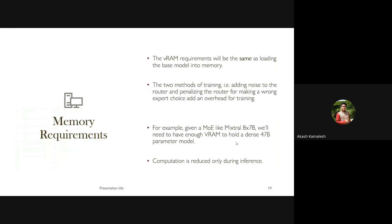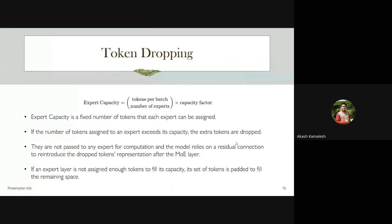Before moving to memory requirements, one more point on token dropping: sometimes token dropping is considered a form of regularization — like dropout — where some tokens are randomly dropped to make the expert more robust. This is a concept Google DeepMind has proposed, but it depends on how many tokens are dropped. If 60% of your tokens are dropped, it's not helping.